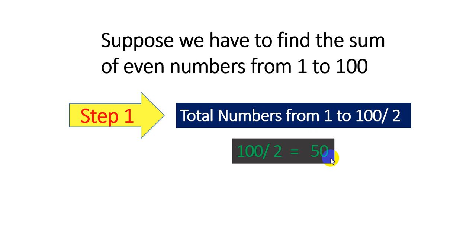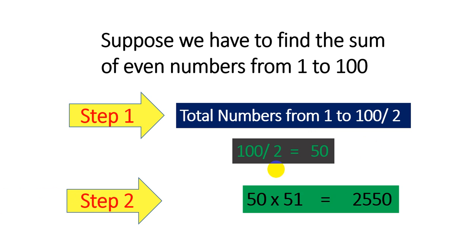So in the first step you get 50. In the second step we take this 50 which we got in the first step and the next number is 51. We take the product of 50 and 51 to get the answer as 2550. That's enough.